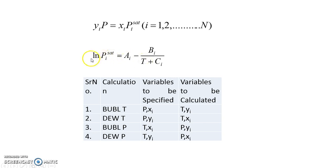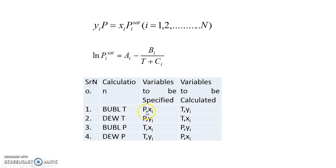If I substitute vapor pressure equal to system pressure, it gives me T1_sat and T2_sat for the two components. If I substitute P1_sat or P2_sat, I get the system temperature. In Bubble T and Dew T, temperature is unknown. For Bubble T we specify P and x and find T and y; for Dew T we specify P and y and find T and x.